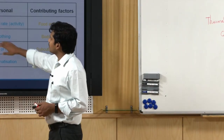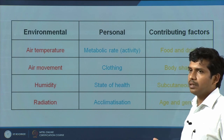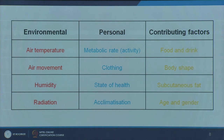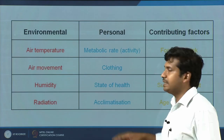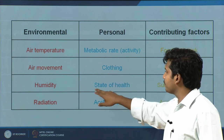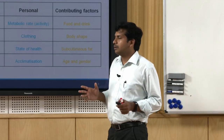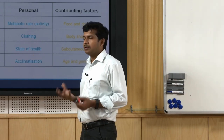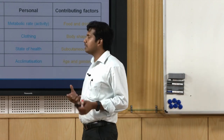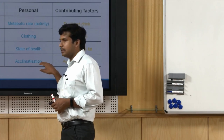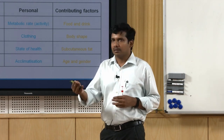Metabolic rate is a primary determinant of personal variables. The next personal variable is the type of clothing you wear — whether it is light summer cotton wear or thermal woolen wear for winter. Next is the state of health, which varies from person to person: if you are physically well, your thermal perception differs from when you have some ailment, as you may perceive the same environment in a slightly different manner.